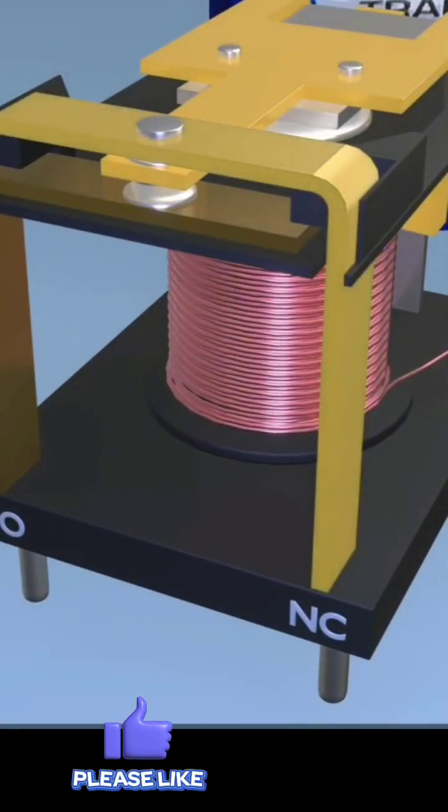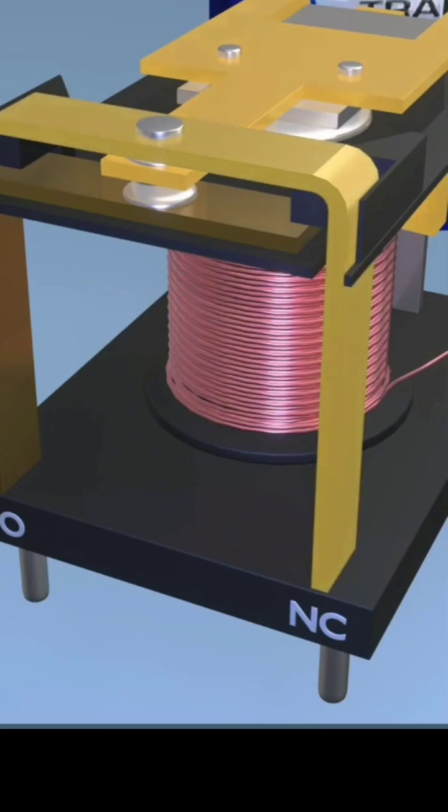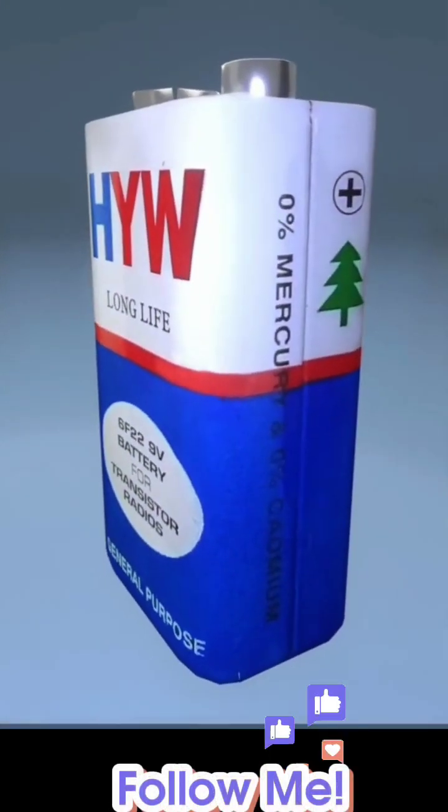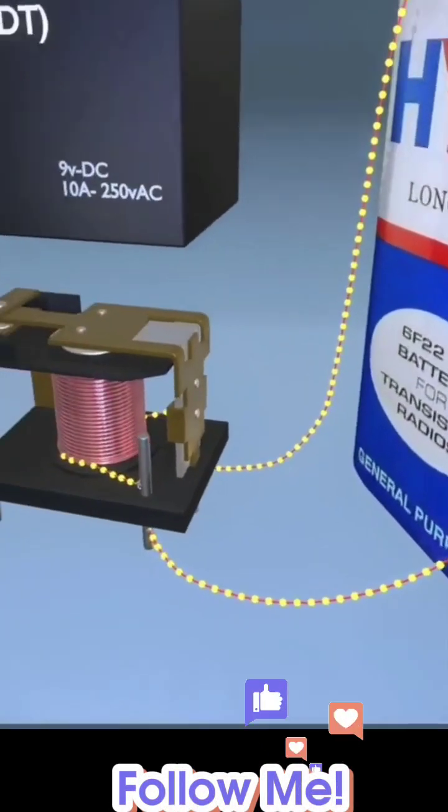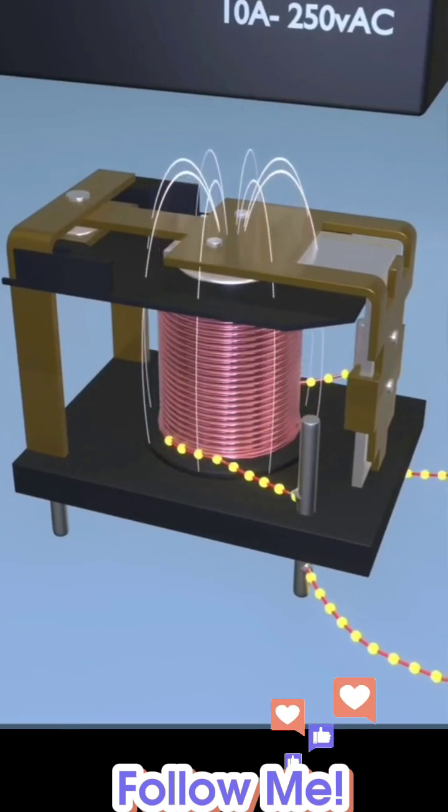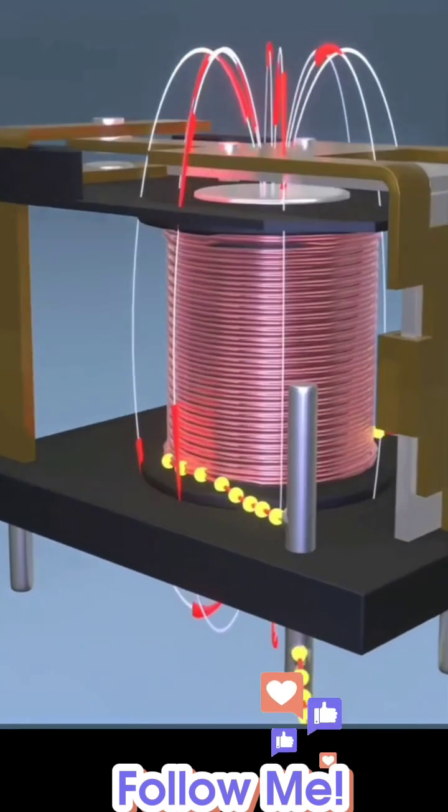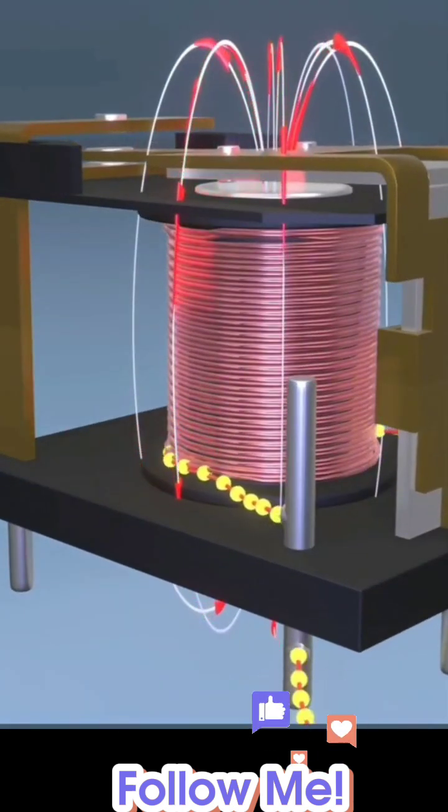It operates on the principle of electromagnetic attraction. When we apply voltage to its coils, it generates a magnetic field that activates the armature, and the consequent movement of the movable contacts either makes or breaks.